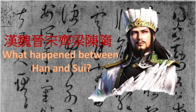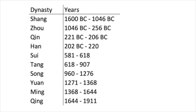Chinese history can be divided into dynasties. A dynasty is a period of time when China was ruled by emperors from a single imperial family. In high school world history class, you have probably learned some major dynasties in Chinese history, like Shang, Zhou, Qin, Han, Sui, Tang, Song, Yuan, Ming, and Qing.